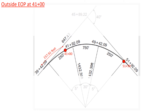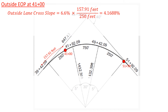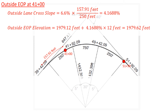Starting with station 41, we're looking for the outside edge of pavement. The outside lane cross slope is our design superelevation of 6.6% multiplied by the transition proportion: 157.91 feet divided by the 250-foot spiral transition, giving a cross slope of 4.1688% at station 41. The outside edge of pavement elevation is then 1,979.12 feet plus 4.1688% times the 12-foot lane width, which gives us 1,979.62 feet.